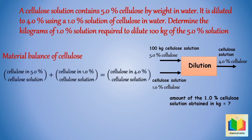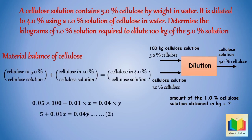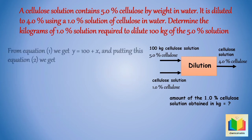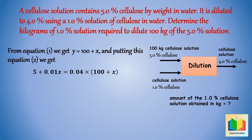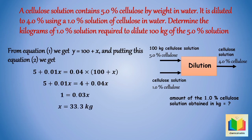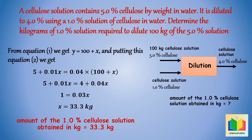Material balance of cellulose: cellulose in 5% solution + cellulose in 1% solution = cellulose in 4% solution. Putting in the given values: 5 + 0.01x = 0.04y (Equation 2). Substituting y = 100 + x from Equation 1: 5 + 0.01x = 0.04(100 + x). Solving this gives x = 33.3 kg. Hence the amount of 1% cellulose solution required is 33.3 kilograms.